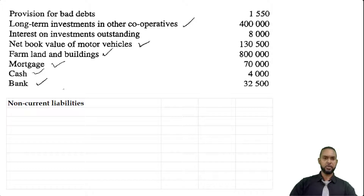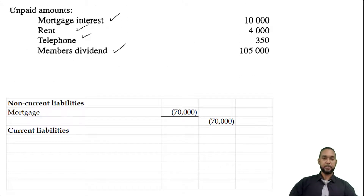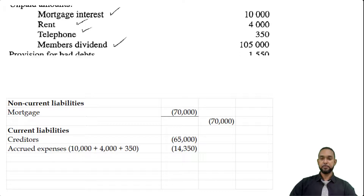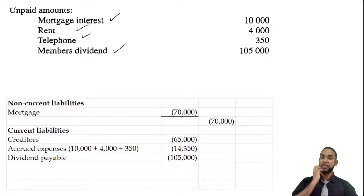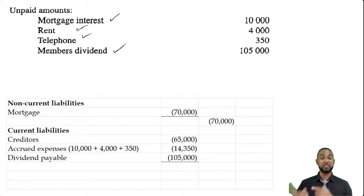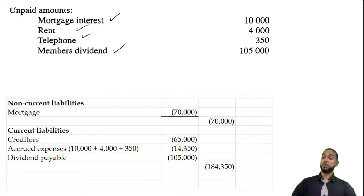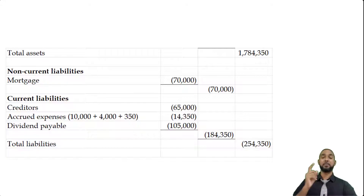Now we have non-current liabilities. We have a mortgage of $70,000 — that's the only non-current liability. For current liabilities, we have unpaid amounts for mortgage interest, rent, telephone, and members' dividend, and further down we have creditors. I'm putting creditors and the accrued expenses together, and the dividends separately. You could have listed all four things separately or condensed them into one, but I prefer to have dividend payable shown separately because it's not an expense. Accrued expenses should generally be condensed into one line item. Current liabilities total $184,350. Adding that to non-current liabilities gives $254,350, and subtracting from total assets gives us net assets of $1.53 million.